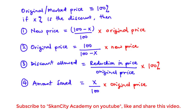You can use that approach to find the new price. If you want to find the original price, then the original price is equal to 100 divided by (100 minus x), where x is the discount, multiplied by the new price.